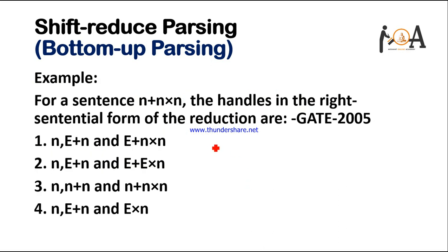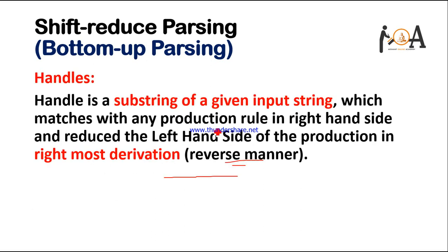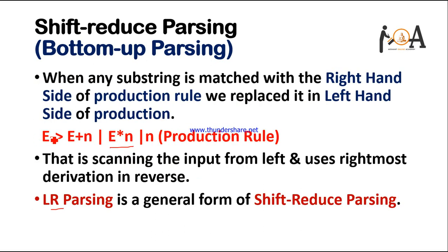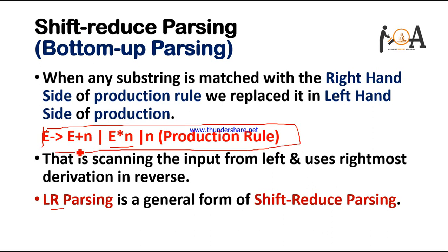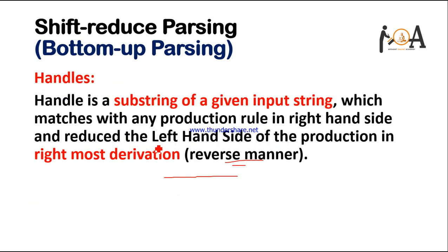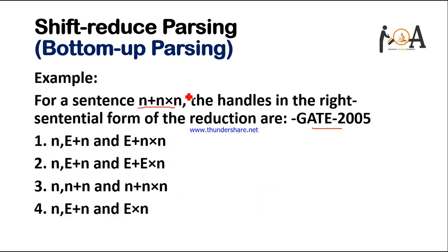Suppose the example given to us is, as in GATE 2005, for a sentence N plus N into N. The handles in the right sequential form of the reduction — for that we need a production rule. Suppose the production rule given to us is: E derives E plus N, E multiply with N, and N. Our goal is to find the handles in the right sequential form.